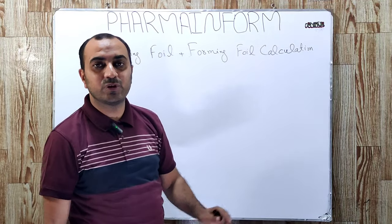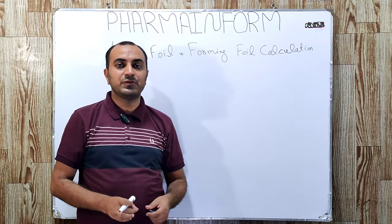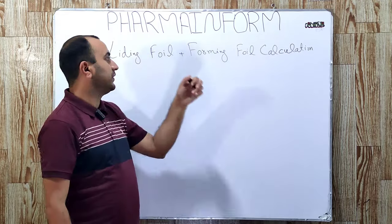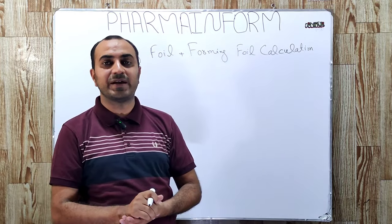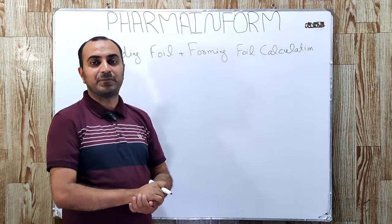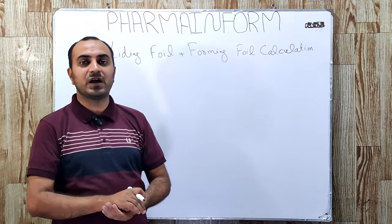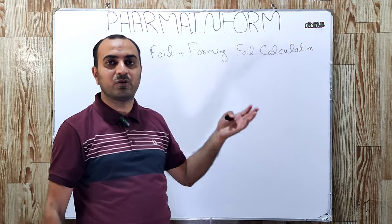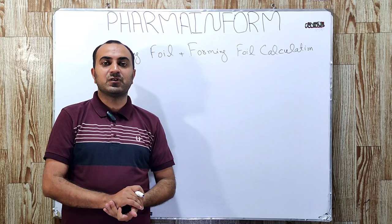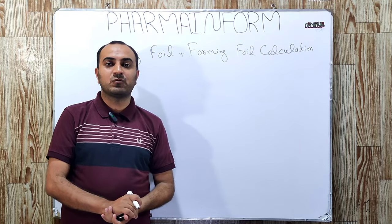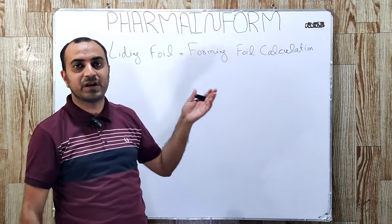Hello everyone, I am Sejad and today we will discuss a most important and demanding topic, which is the calculation of leading foil and forming foil for blistering a specific batch size of tablets or capsules. If you are working in pharmaceutical industries, you know that we always require a specific quantity of printed foil and base foil for blistering of a batch. The question is: how can we calculate the exact quantity of foil required?